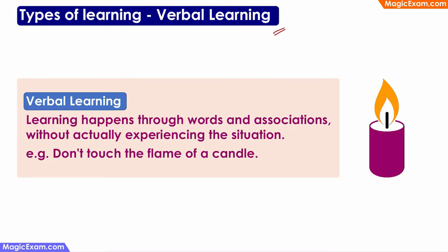In verbal learning, learning happens through words and associations. For example, if I tell a child not to put their finger in a flame because it will burn and is very hot, the child associates the words hot and burn with the word pain. The child does not need to put their finger in the candle flame to experience it — they already know what will happen. So the child is learning verbally without actually experiencing it.